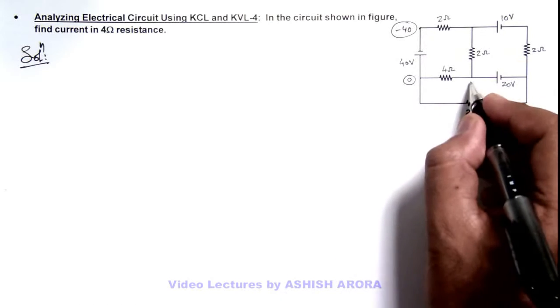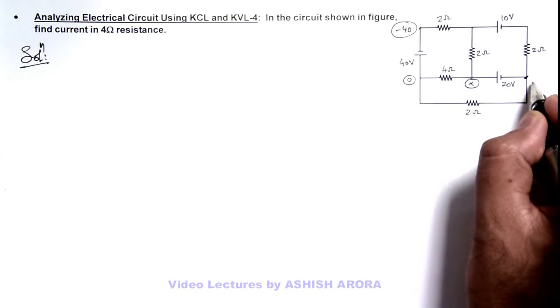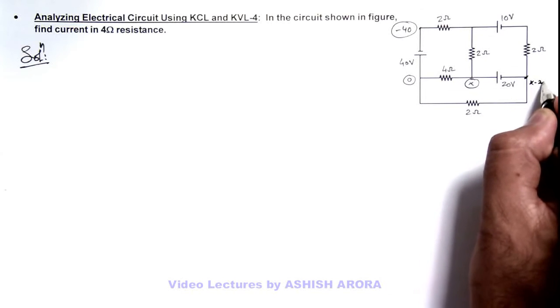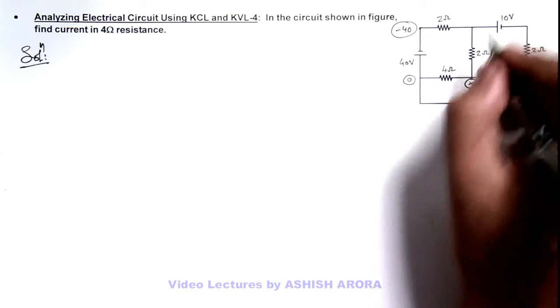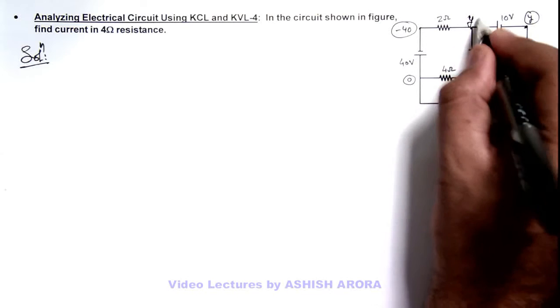So if here potential is taken as x, on this point potential will be written as x minus 20. Here I take potential as y, so this will be y plus 10.